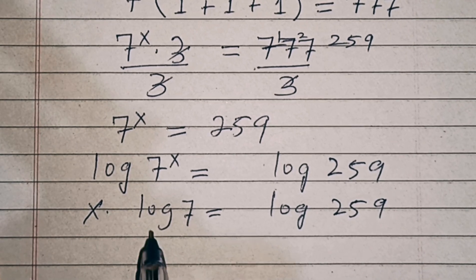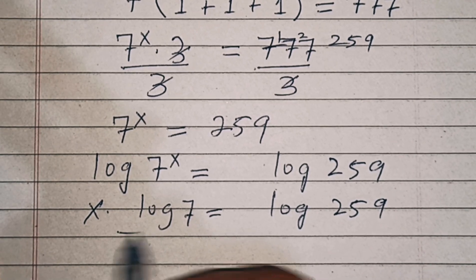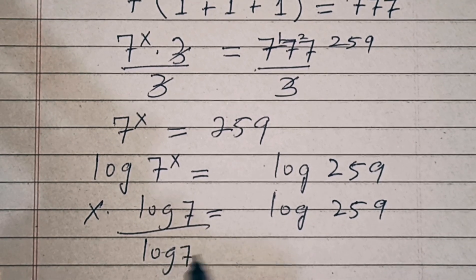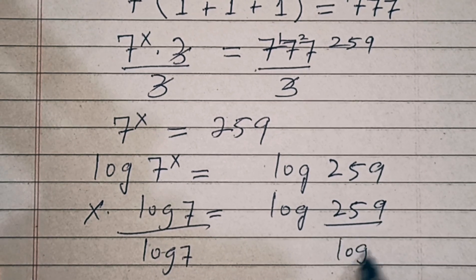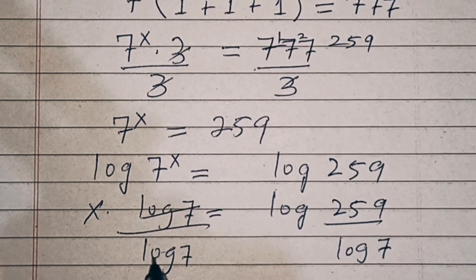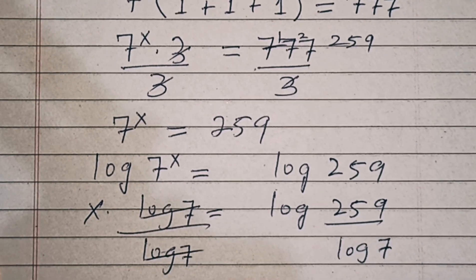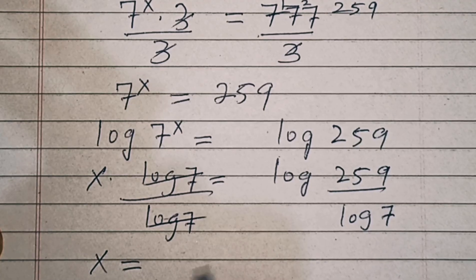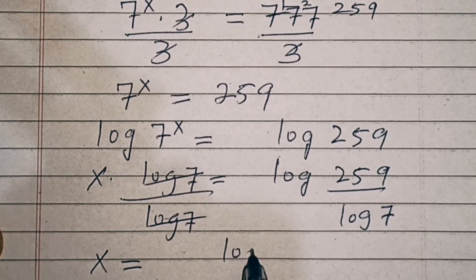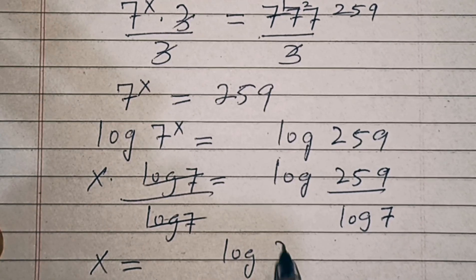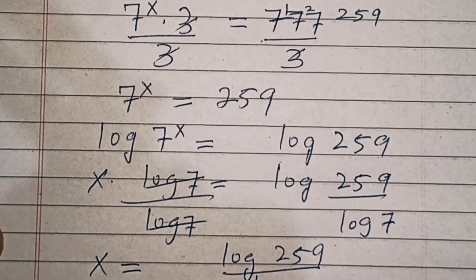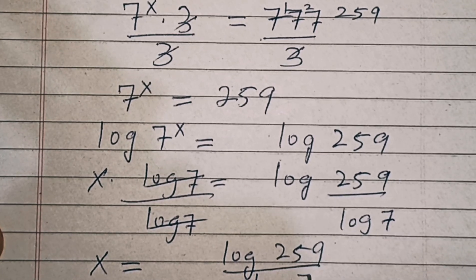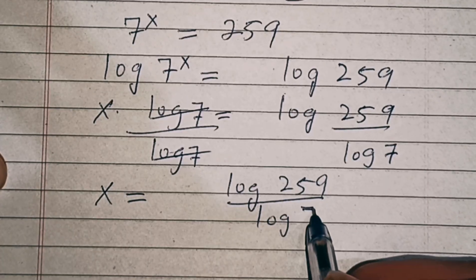Now we divide both sides by log of 7. The log 7 on the left gets cancelled out, so we have x equal to log of 259 over log of 7.